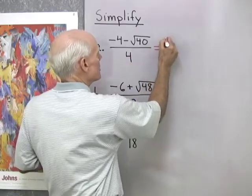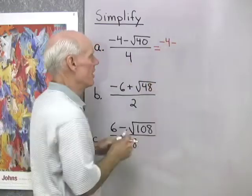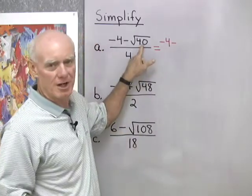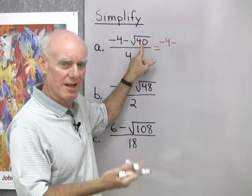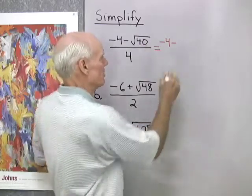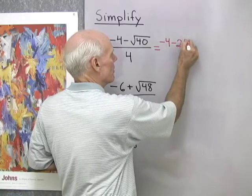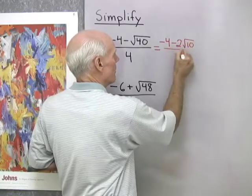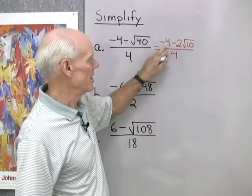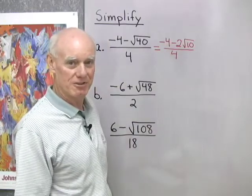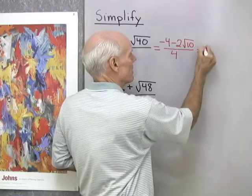So what I'm going to do is simplify the radical first, and I know that 40 is 4 times 10. So square root 40 is going to be square root 4 times square root 10, and that square root 4 I can write as 2. So 2 square root 10 all divided by 4, and then what I'll do is take the greatest common factor I see for the two terms in the numerator outside with factoring.